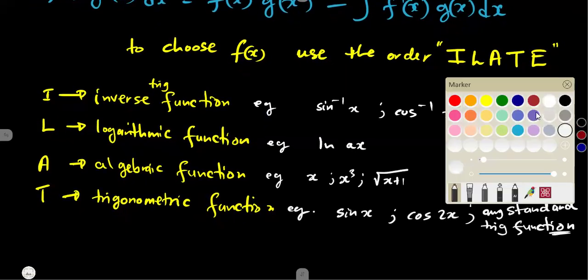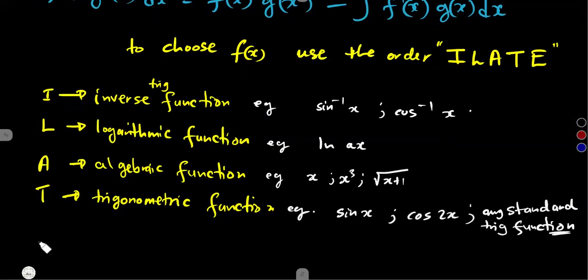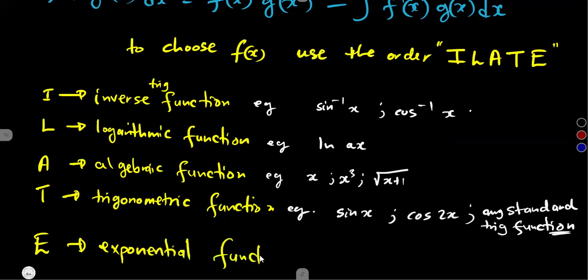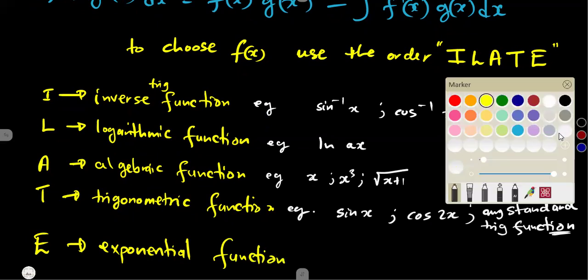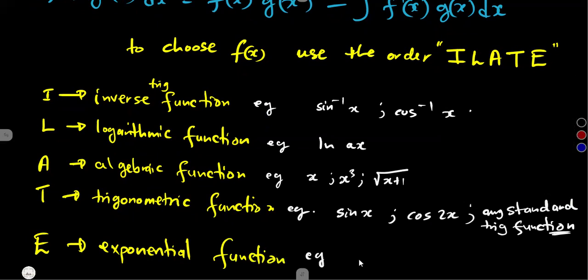The last part is E, representing the exponential function. These are functions in the form of e^(ax) — whether it is e^x, e^(2x), or whatever is given. You choose the exponential to be your f(x) only as the last option in this order.